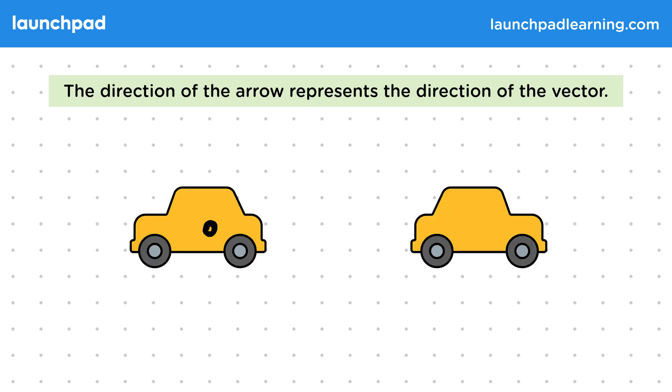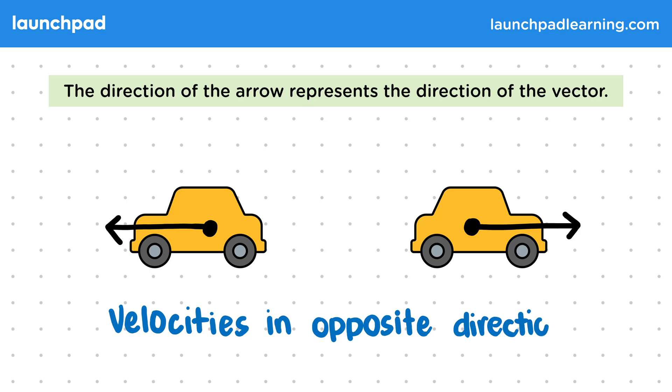So here we have two cars travelling in opposite directions, and this can be seen by the direction of the arrows. So the velocities are in opposite directions.